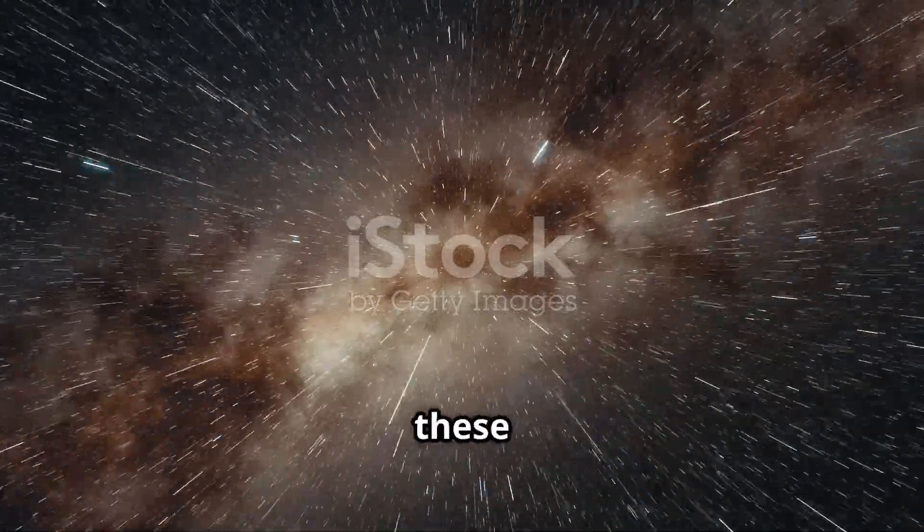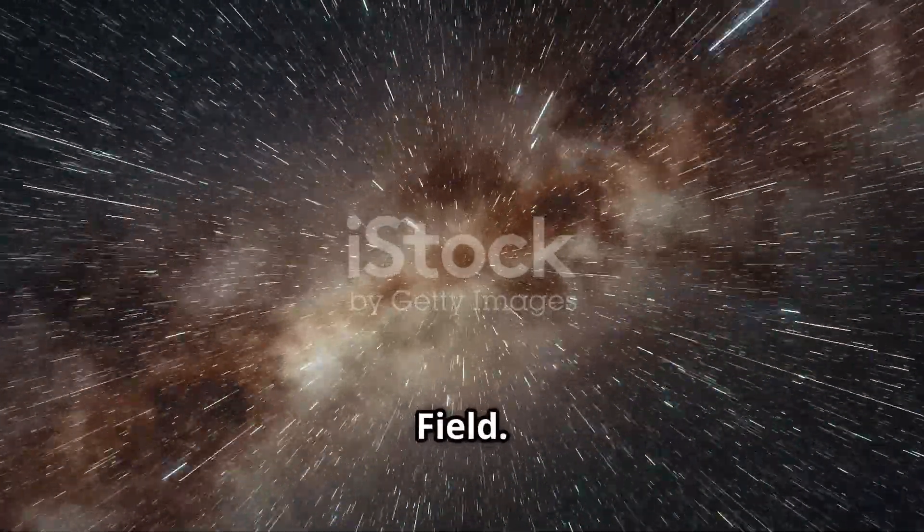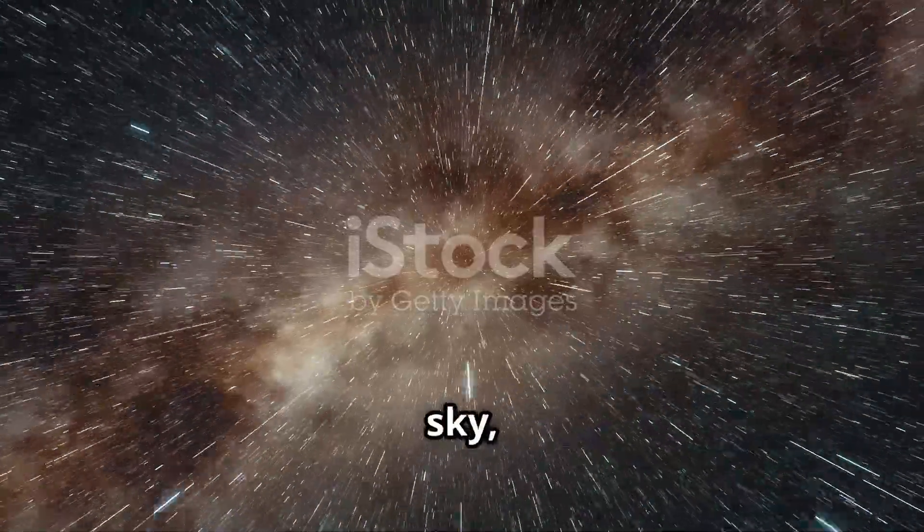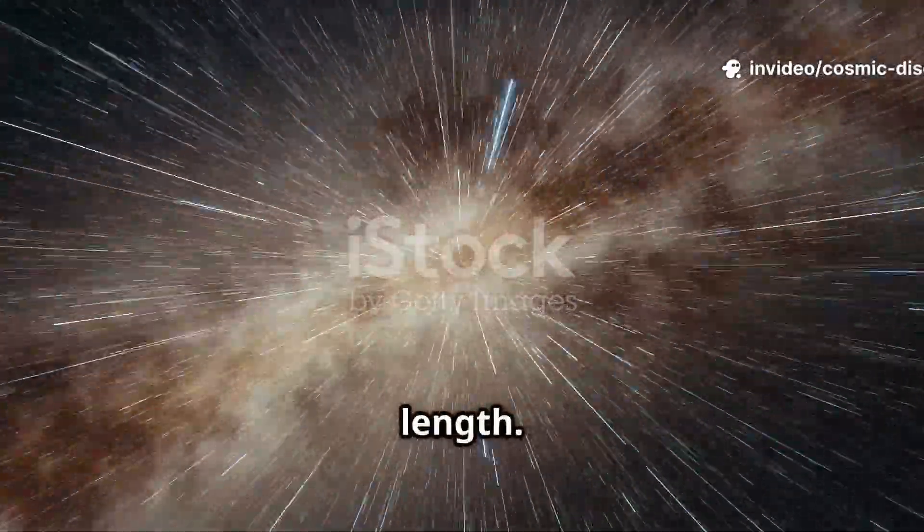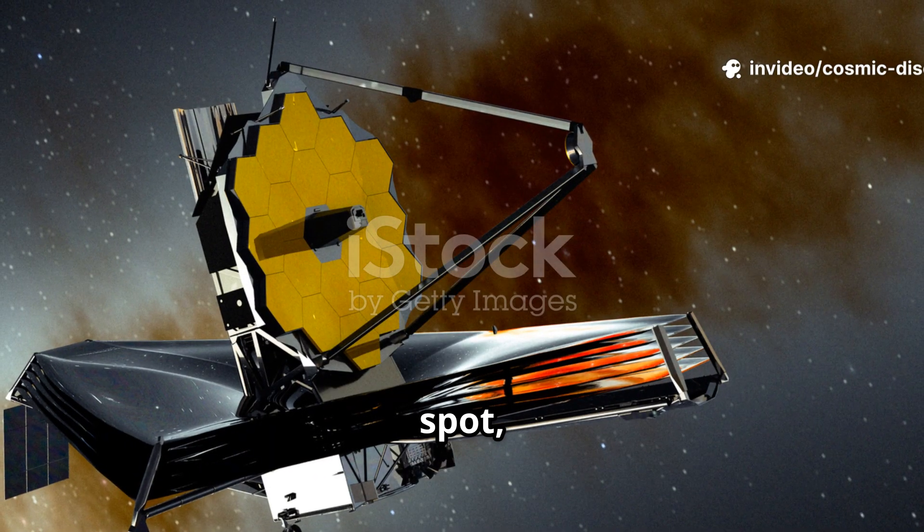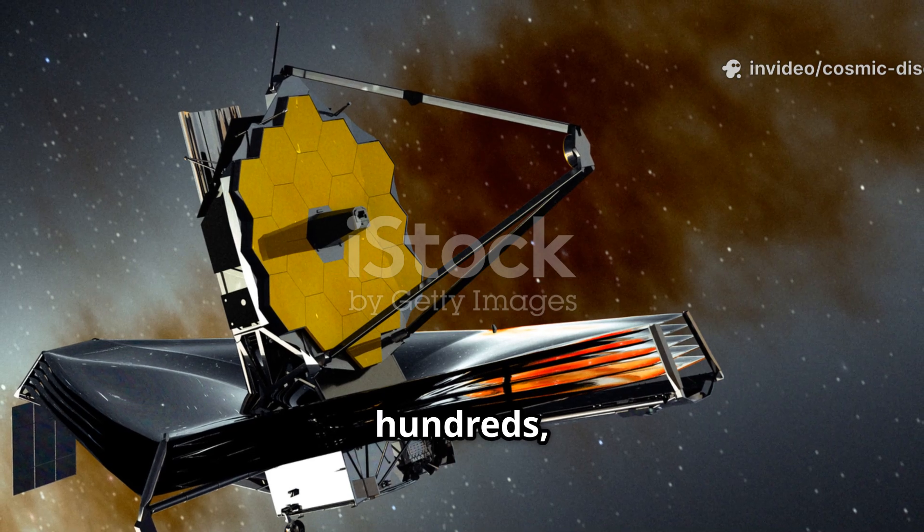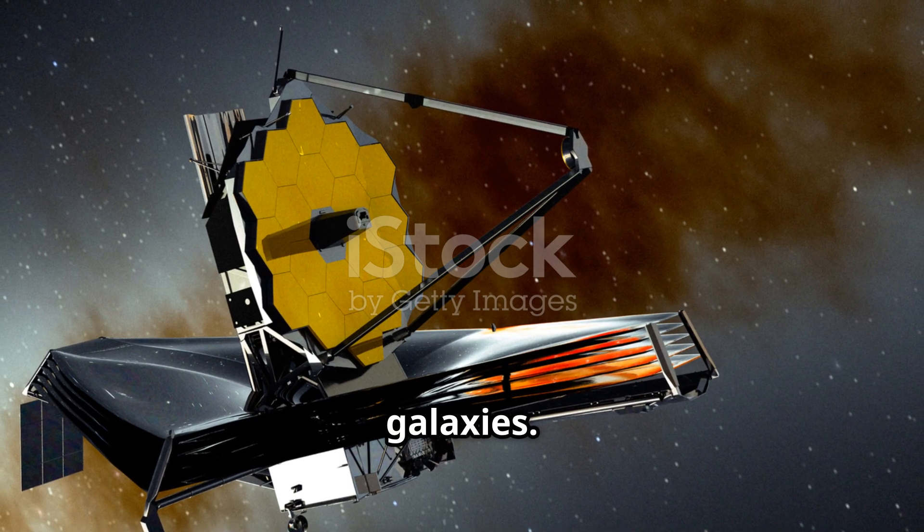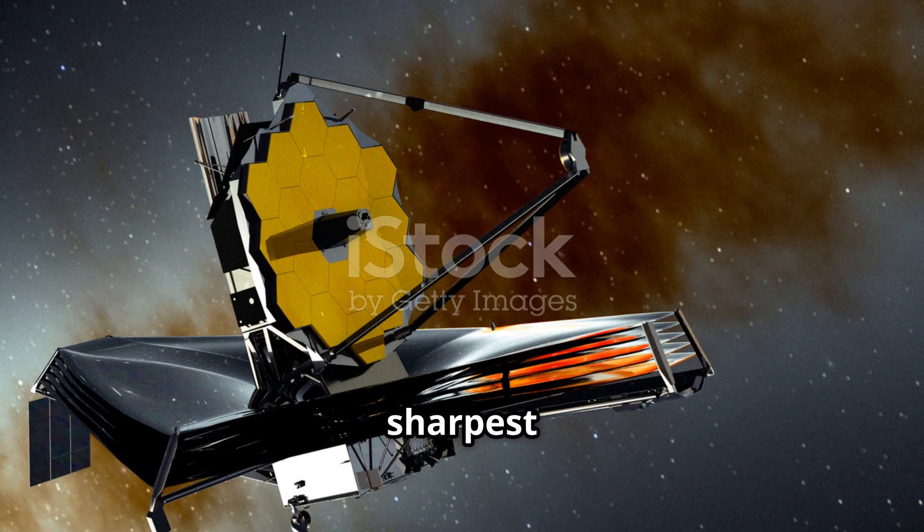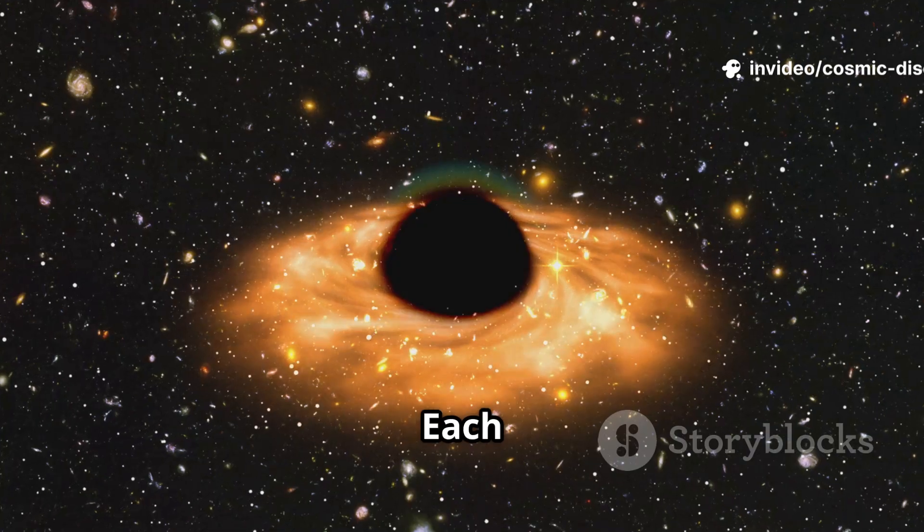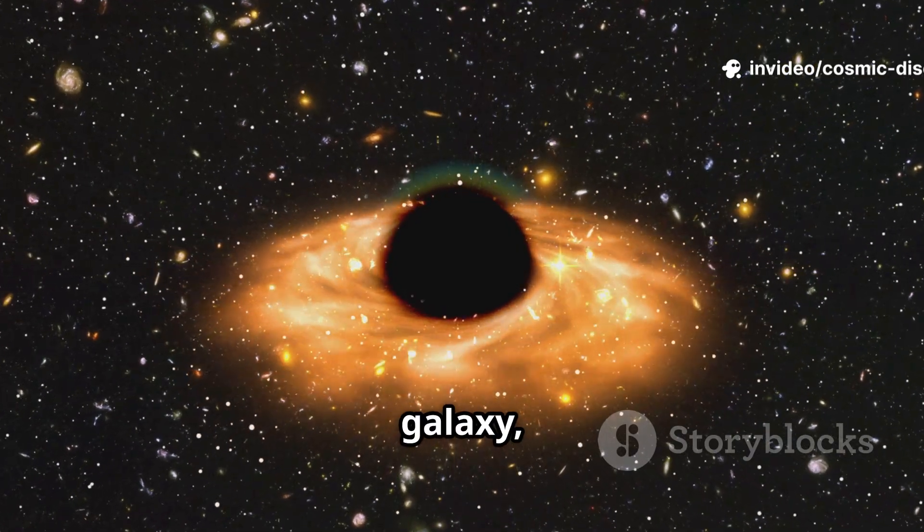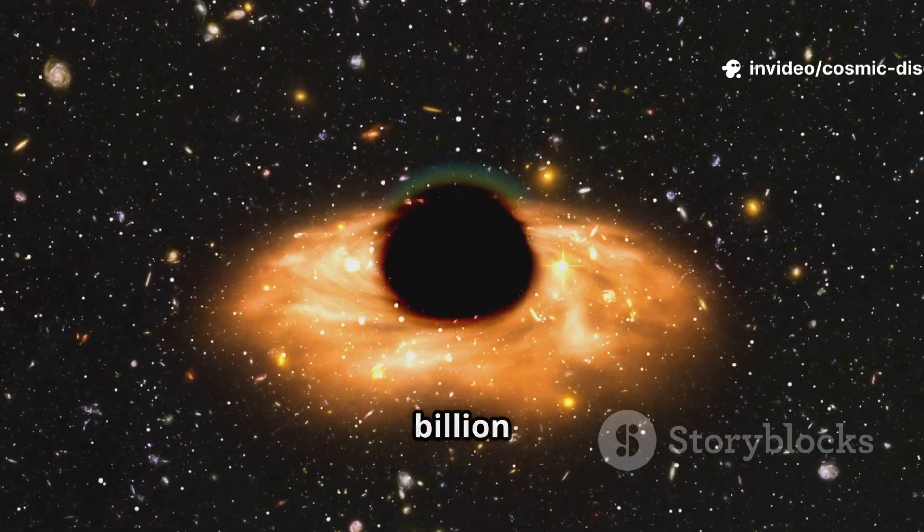The most famous of these was Webb's first deep field. It was an image of a tiny patch of sky, an area that would be covered by a grain of sand held at arm's length. Within that minuscule spot, the telescope revealed not hundreds, but thousands of galaxies. It was the deepest and sharpest infrared image of the distant universe ever taken. Each speck of light was a galaxy, some seen as they were over 13 billion years ago.